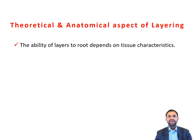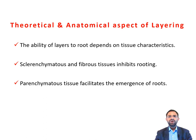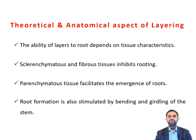Besides this, the ability of layers to root depends to a considerable extent on tissue characteristics. The presence of sclerenchymatous and fibroid tissues inhibits the rooting, while the abundance of parenchymatous tissues facilitates the emergence of roots. Root formation during layering is also stimulated by bending and girdling of the stem. These cause an interruption in downward translocation of nutritional and regulatory substances from leaves and growing shoot apices, causing these materials to accumulate near the cut or girdle, where rooting then occurs.